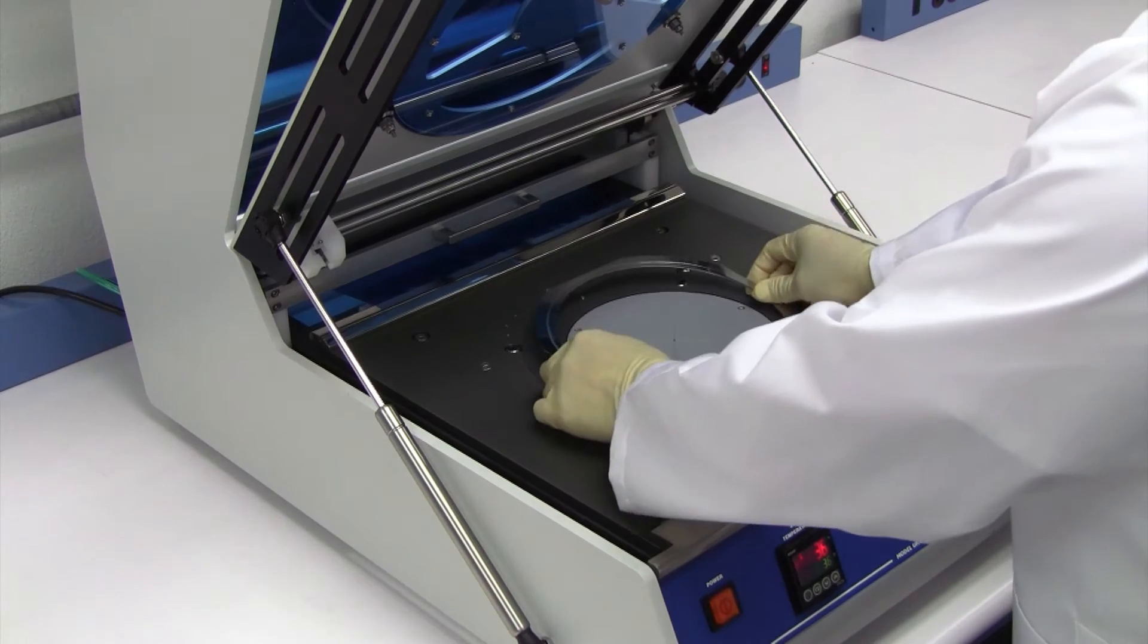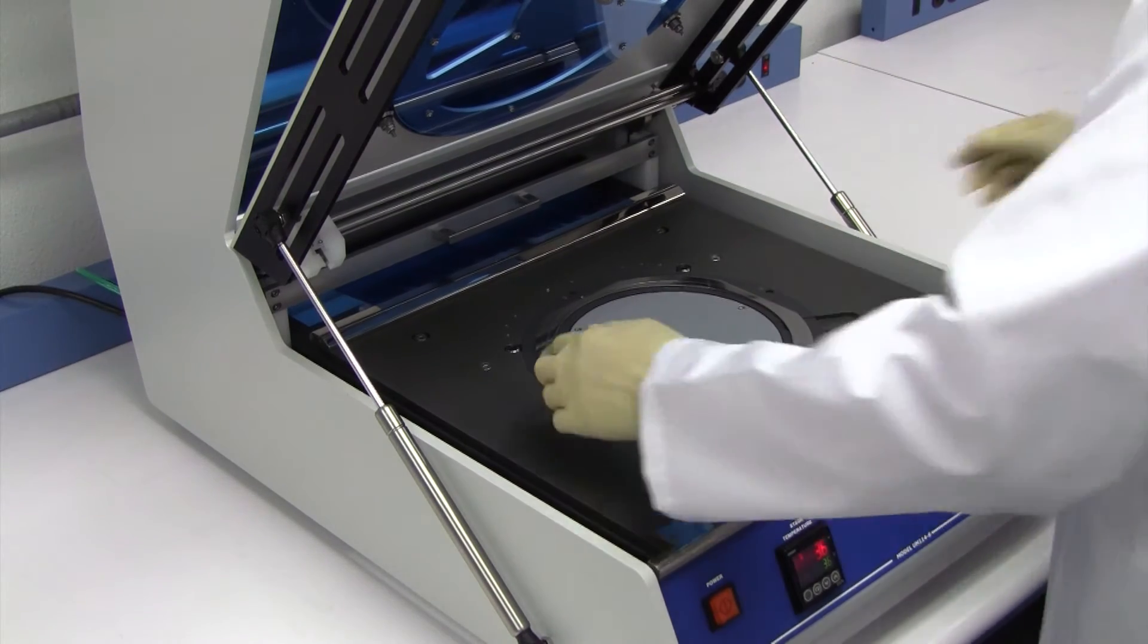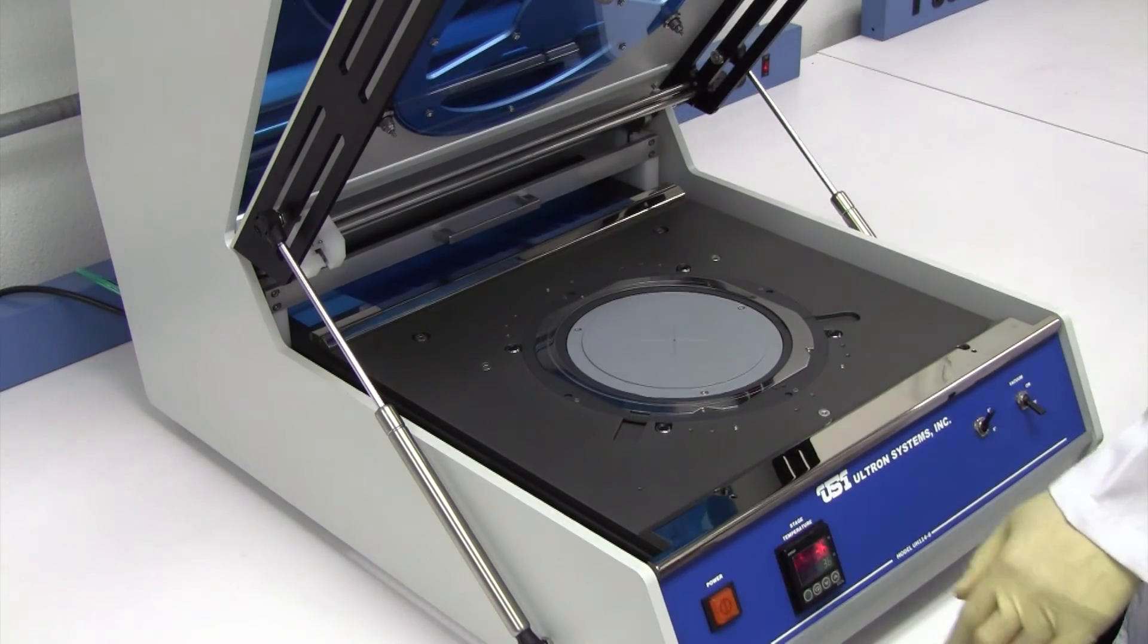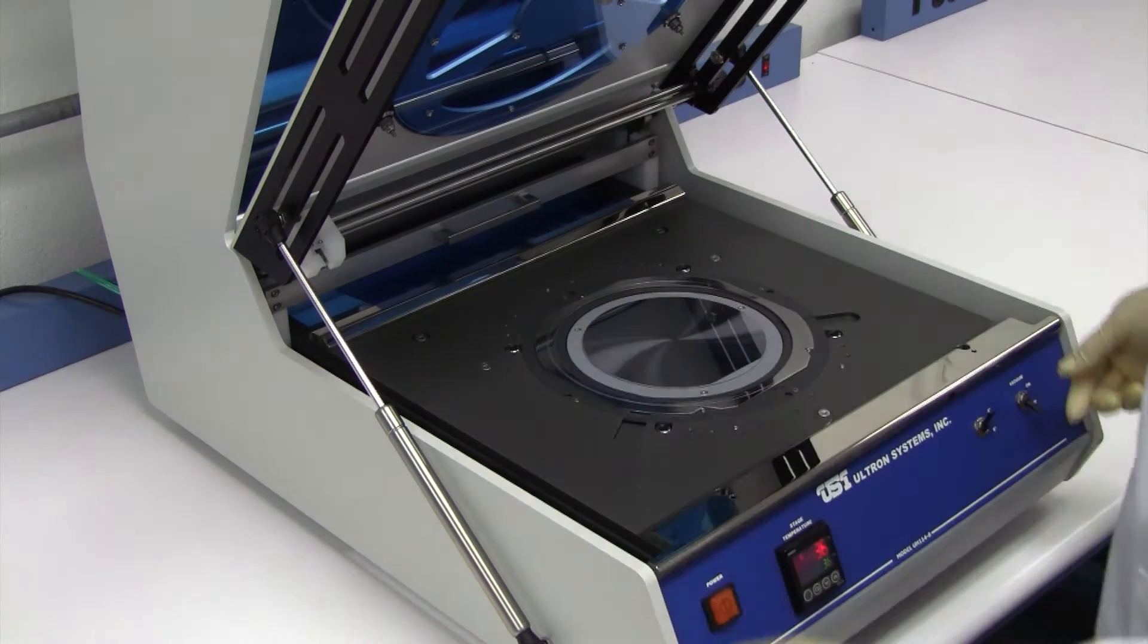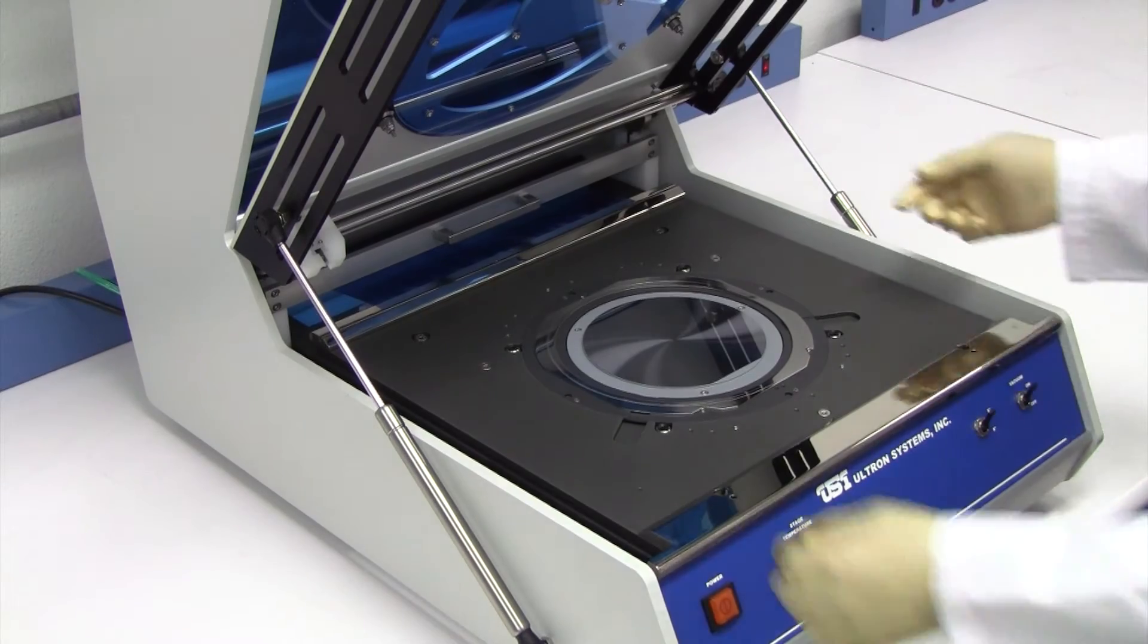First, load the film frame and wafer onto the machine, then turn on the vacuum switch to hold them into position.